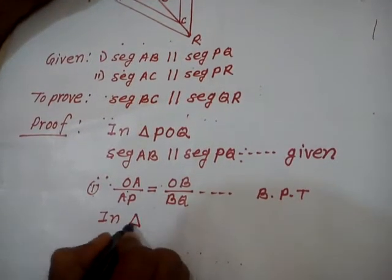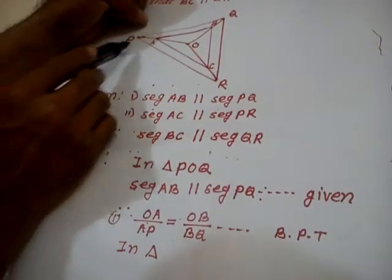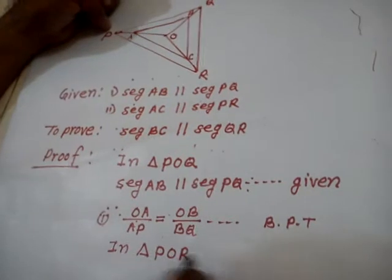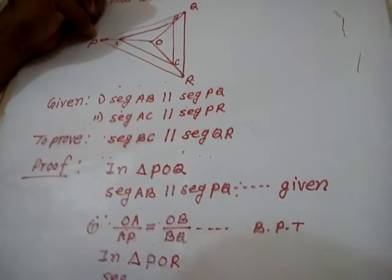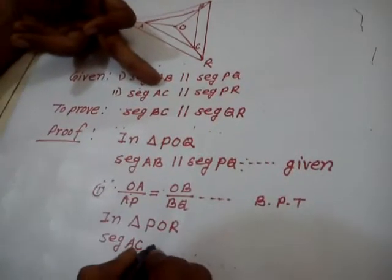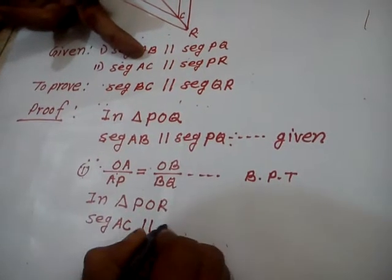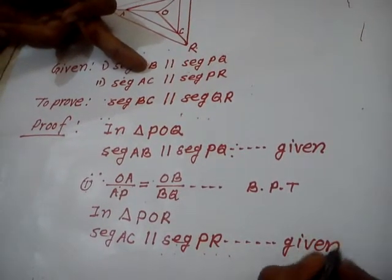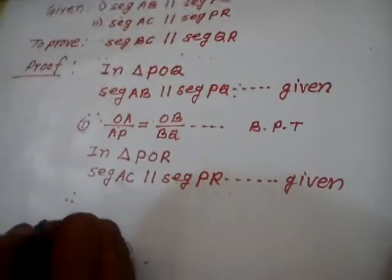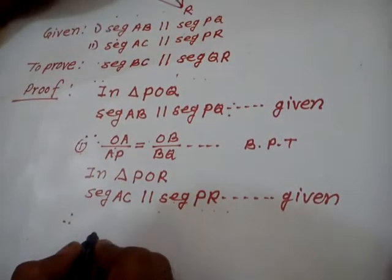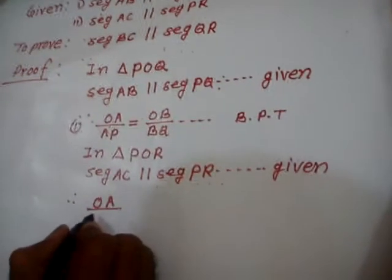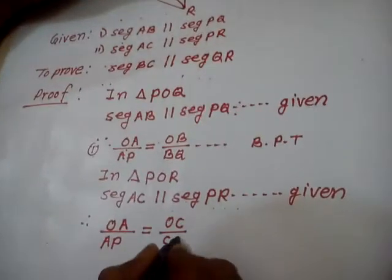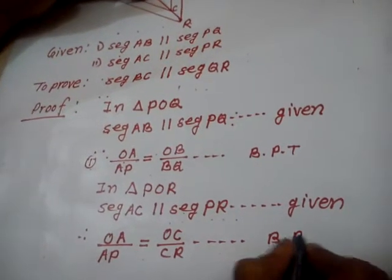In triangle, which one is given to us? Segment AC parallel to segment PR. This is also given to us. Therefore, we can write according to the basic proportionality theorem. What we can write? OA over AP is equal to OC upon CR. Basic proportionality theorem. This is second.